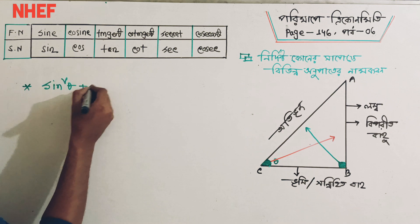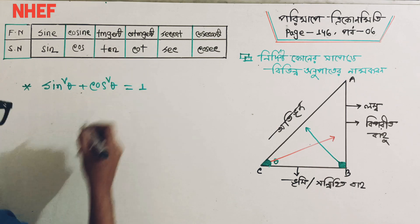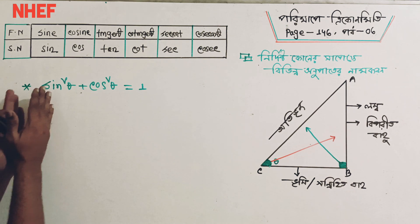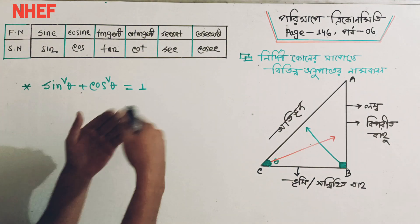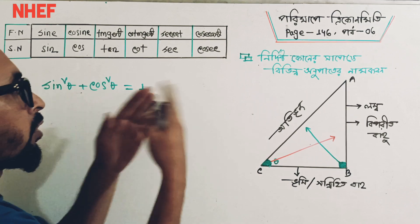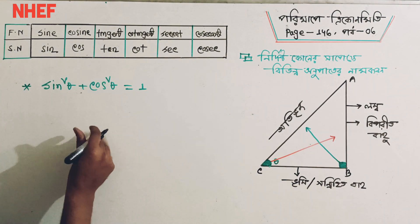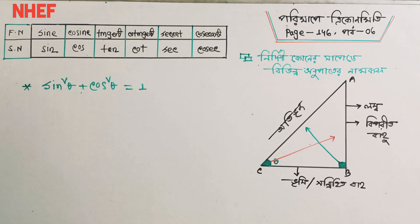Sin²θ plus cos²θ is equal to 1. Right, sin²θ plus cos²θ equals 1. Sin squared plus cos squared is 1. Very interesting. Very good.